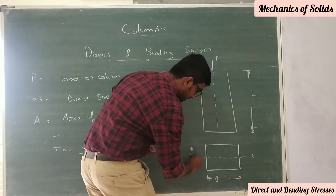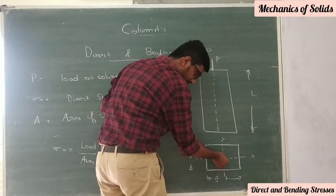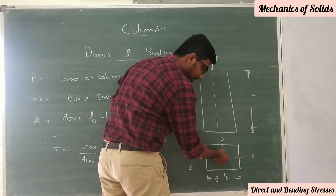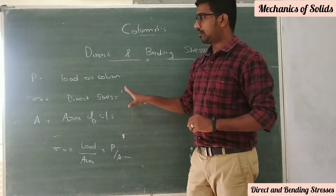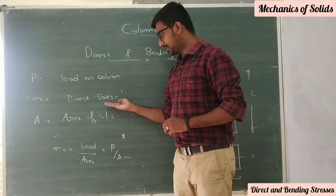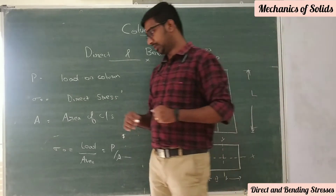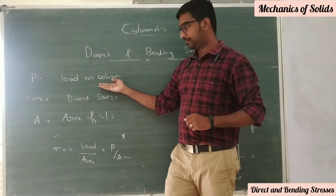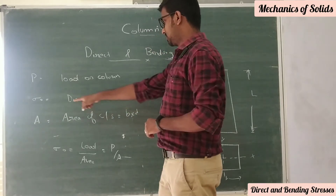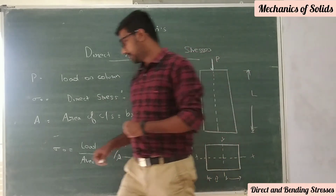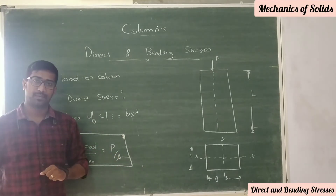The bottom view has a horizontal axis and vertical axis. This is the central point of the load acting, the X and Y axes. The load acting on the centre line is a direct stress. Direct stress is equal to load divided by area, that is equal to P by A. Capital P is the load acting on the column, capital A is the cross-sectional area equal to B into D, and sigma naught is the direct stress. This is Case 1.